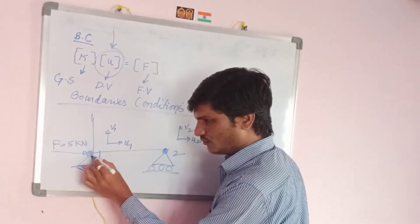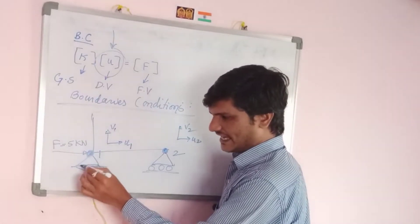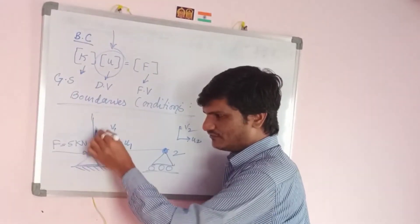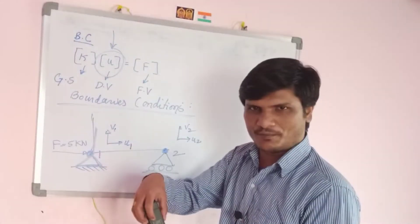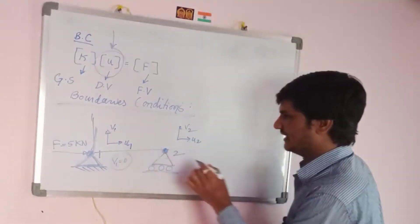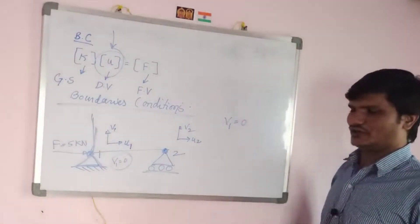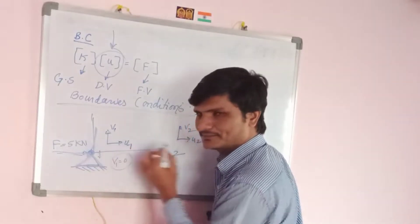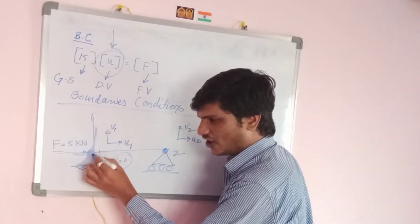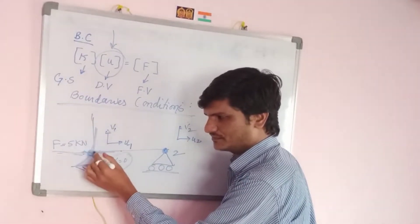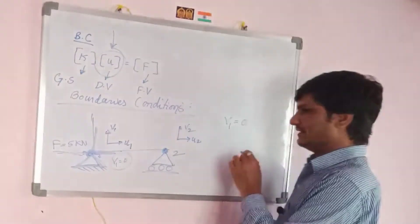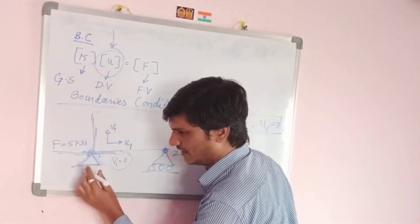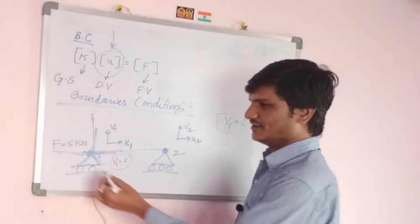At node 1 there is a hinge support. Since it is fixed, there is no vertical deformation, so v1 = 0. Similarly, the element cannot move in the horizontal direction either because it is a hinge support, so u1 = 0 as well. For a roller support, however, horizontal displacement is possible but not vertical displacement.